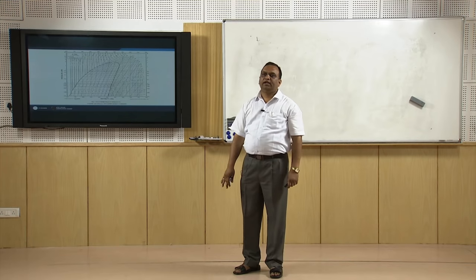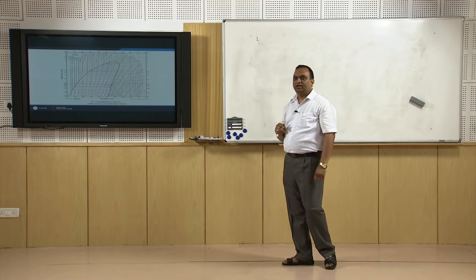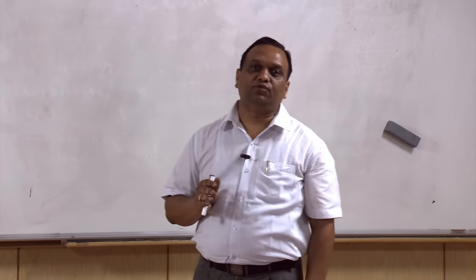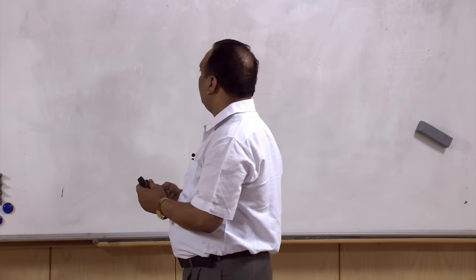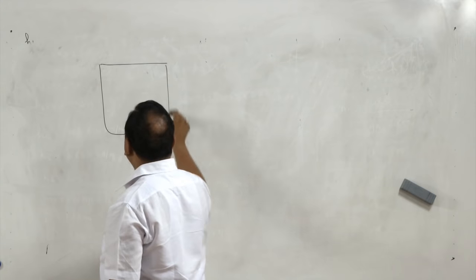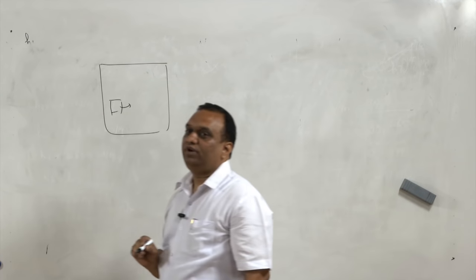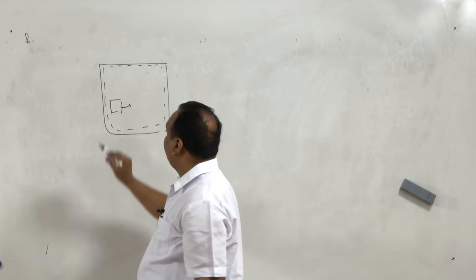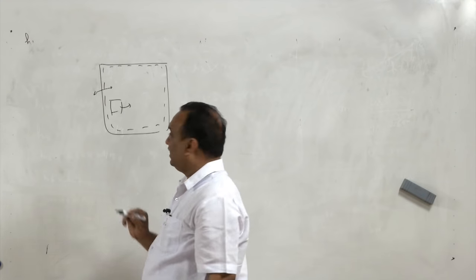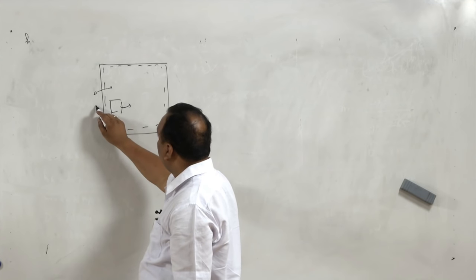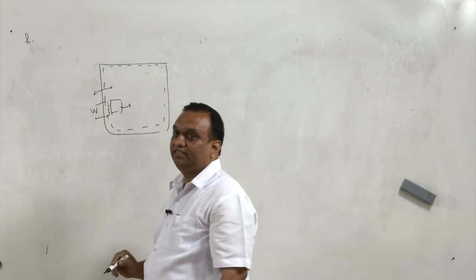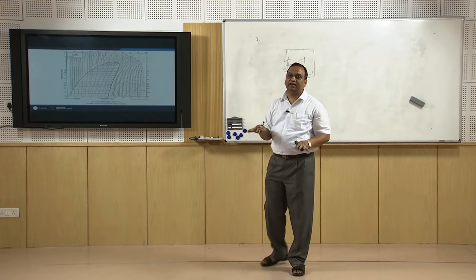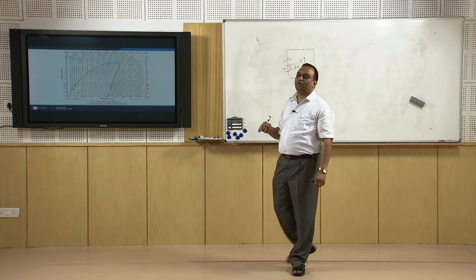There are certain logical queries in refrigeration. If you leave the door of a refrigerator open in a room, the temperature of the room will not go down. Considering the room as a control volume, there is no heat transfer across the boundary of the room. The energy input is only in the form of electrical work, which will actually increase the temperature of the room. In fact, leaving the refrigerator door open will cause the room temperature to rise.